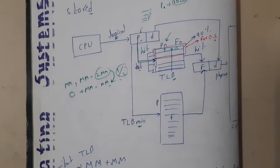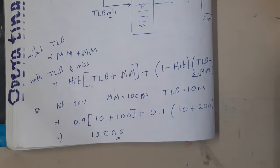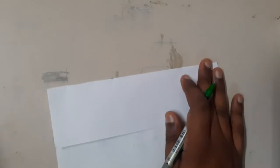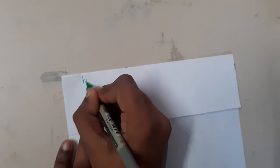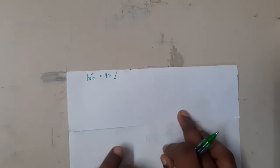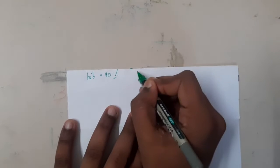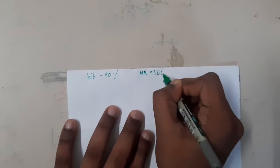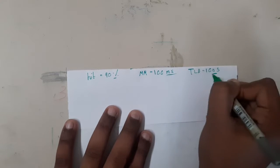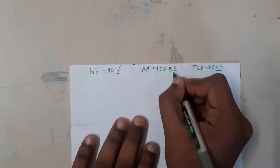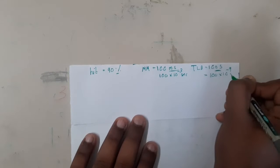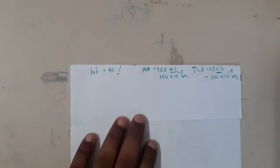Here is a sample question from previous year papers. These problems are easy once you understand TLB — you can solve them in minutes for one or two marks. The question gives: hit ratio = 90%, meaning 90% of the time you find the frame number in TLB directly. Main memory access time = 100 milliseconds, TLB access time = 10 nanoseconds. That is 100×10⁻³ seconds versus 100×10⁻⁹ seconds — TLB is about 10⁶ times faster.